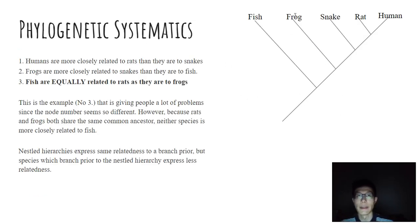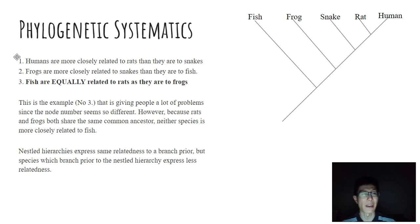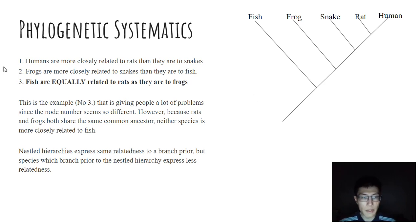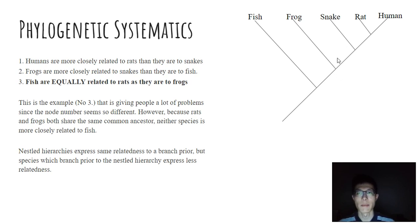Let's look at relatedness with three examples. First: humans are more closely related to rats than they are to snakes. You can see humans and rats share a more recent common ancestor than they do with snakes — a pretty straightforward statement. Second: frogs are more closely related to snakes than they are to fish. Frogs and snakes share a common ancestor that is more derived than the common ancestor shared with fish, so the frog is more closely related to the snake, sharing a common ancestor farther back in time with the fish.